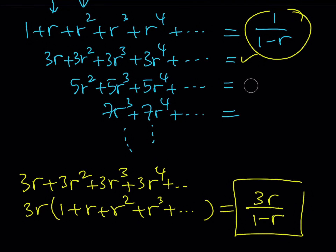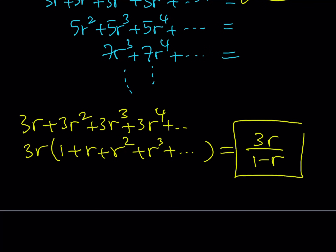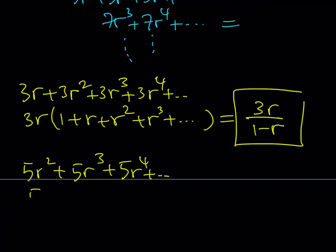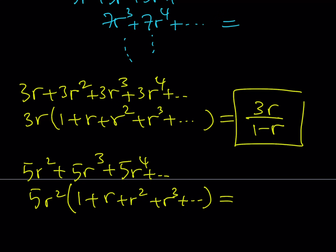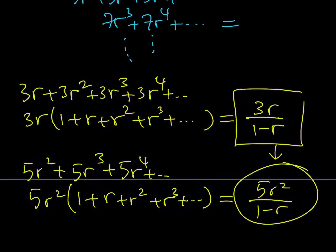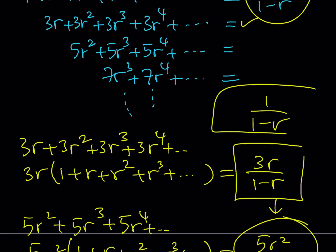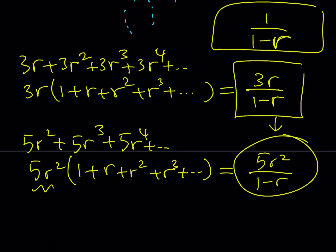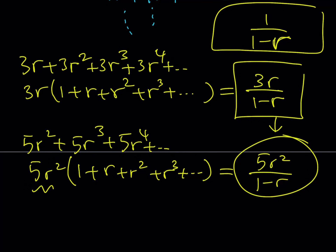Now let's find the third one. For the third series I have something similar but with 5r squared, 5r cubed, 5r to the fourth power, and so on. This sum gives me 5r squared multiplied by 1 plus r plus r squared plus r cubed and so on, which equals 5r squared over 1 minus r — for the same reason, since the sum inside the parentheses is 1 over 1 minus r. Let me do one more and then we'll put these all together.